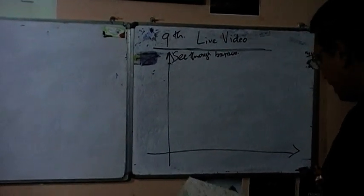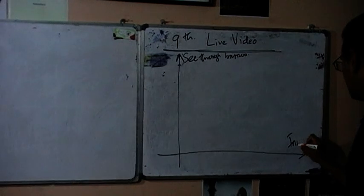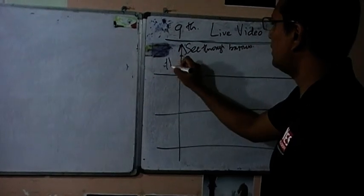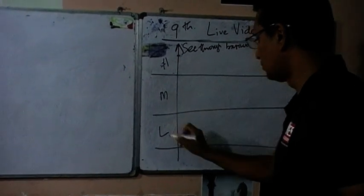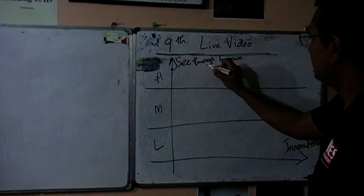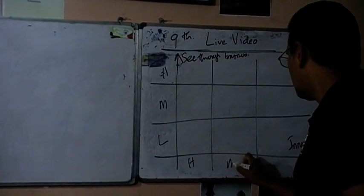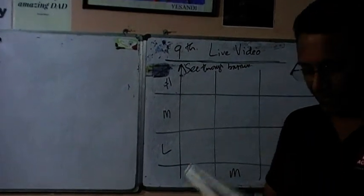On the other axis you will have innovations. I am going to divide this into three: see-through business — high, medium, and low. Innovations — high, medium, and low. So let's see where the real entrepreneur is going to be.